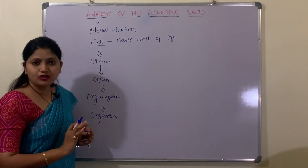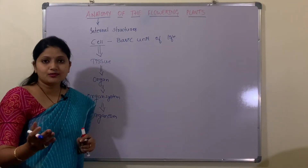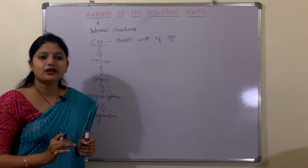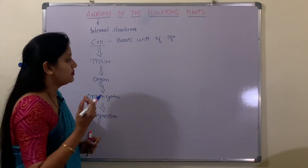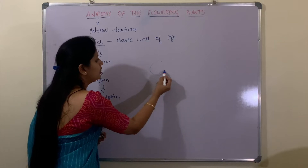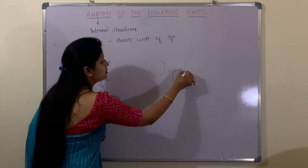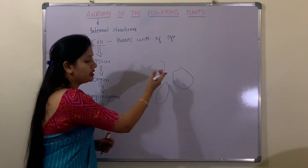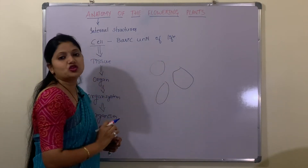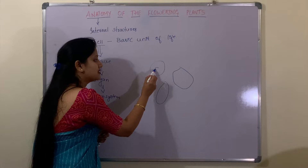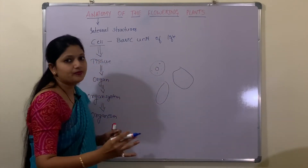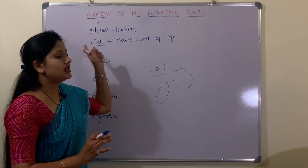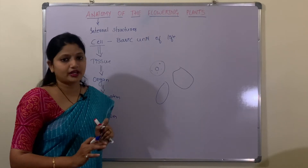Irrespective of whatever type of cell it is, the cells are not similar all over the plant — the cells are definitely dissimilar. However, the basic structure remains the same. The cell may be of different shapes — round, polygonal, or elongated — and may carry out different functions, but the basic structure of the cell remains the same. That is, the cell has the nucleus, cell organelles, and cytoplasm. This basic structure we will study in the 'Cell: the Unit of Life' chapter.